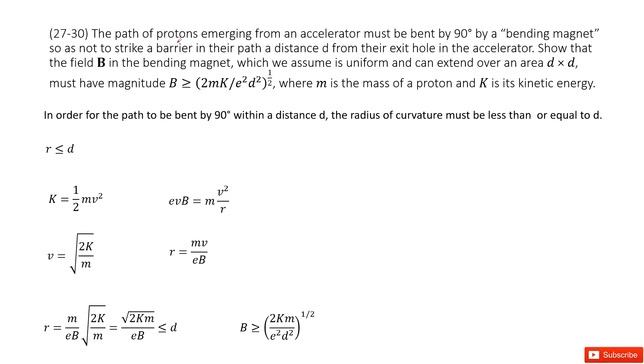So we have a proton doing circular motion in the magnetic field. It tells us it will bend by 90 degrees in a region where the distance is d.